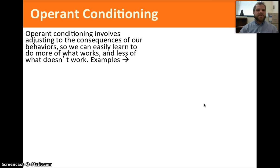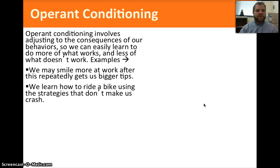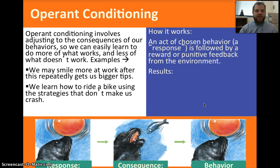The book defines operant conditioning as adjusting to the consequences of our behaviors so that we can learn to do more of what works and less of what doesn't work. For example, we may smile more at work after this repeatedly gets us bigger tips, or we learn how to ride a bike using strategies that don't make us crash. An act of chosen behavior or response is followed by a reward or punitive feedback from the environment.